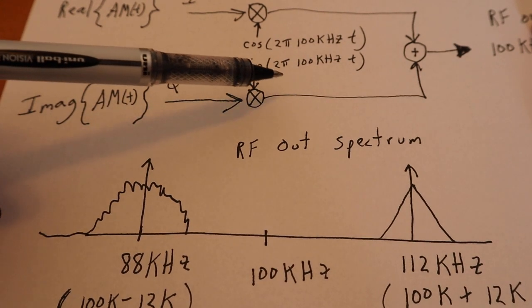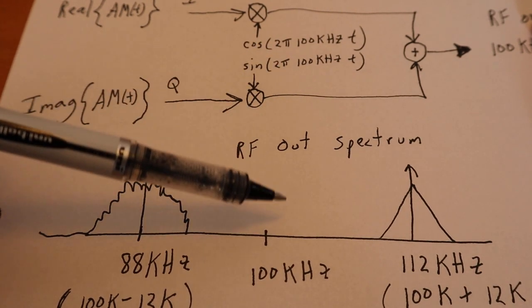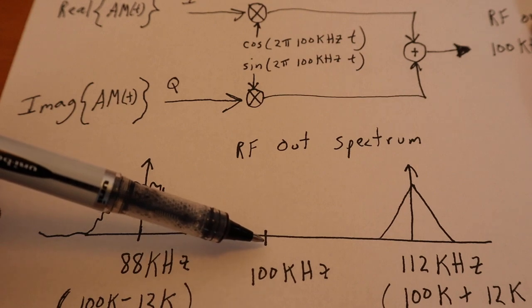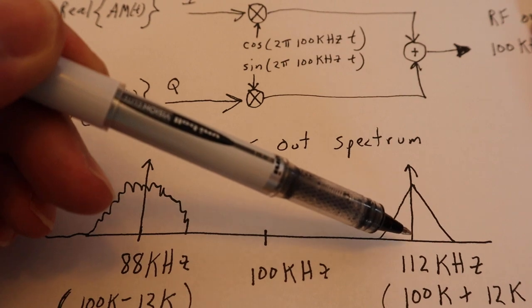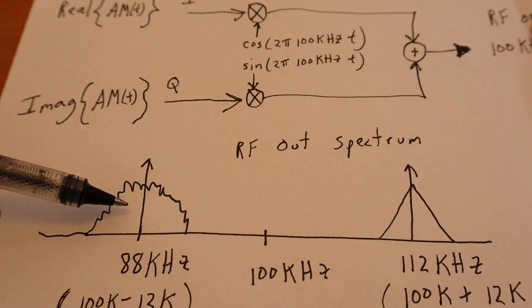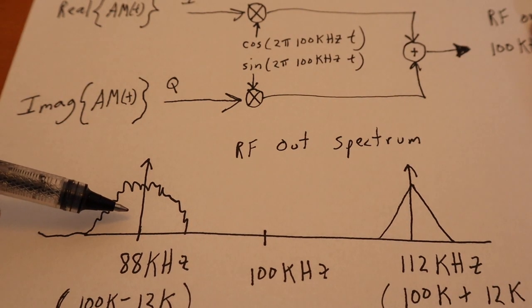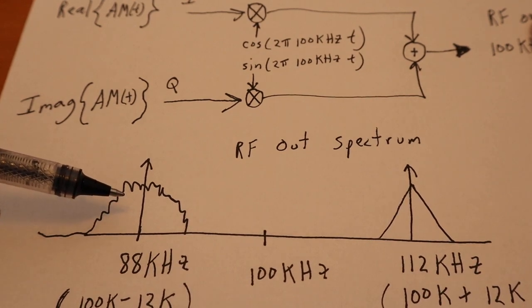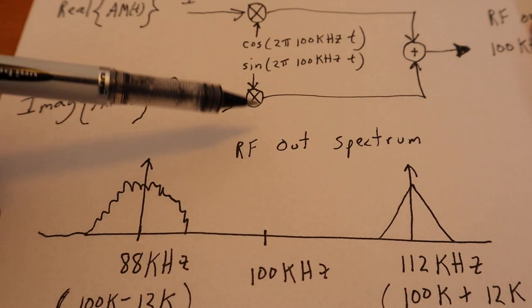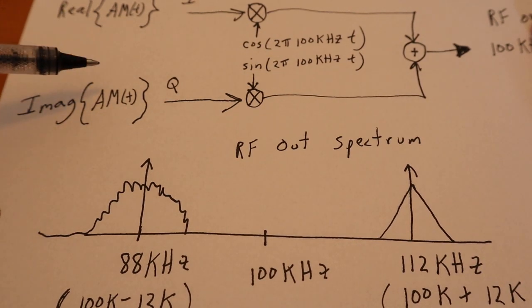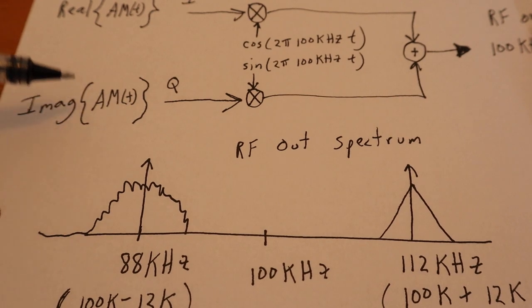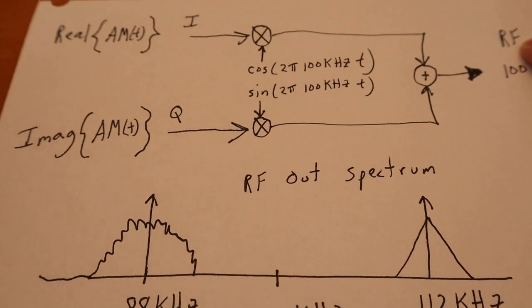which is what we do here. And the beauty of this is we can change this carrier. We could make this carrier be 1 MHz. And now this would become 1 MHz. And the AM signal here would be 1 MHz plus 12 kHz. And the AM signal here would be 1 MHz minus 12 kHz.